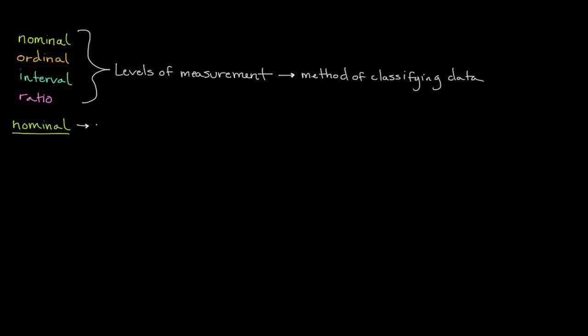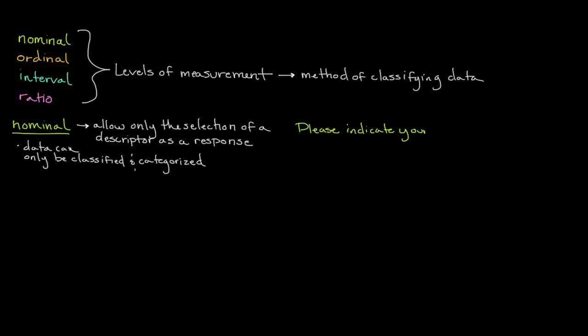With the nominal scale question, respondents are only able to select a descriptor as a response. As a result, data obtained through these types of questions is restricted to being classified and counted. Examples of nominal scales include asking respondents to indicate their marital status. Available options often include married, single, separated, divorced, and widowed.